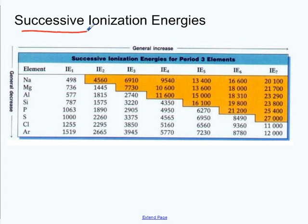Successive means one after the next, after the next, after the next. It's not a chemistry term — it's an everyday English term. So successive ionization energies: not just the first one, but a second one, a third one, a fourth one, until you run out of electrons for the atom.